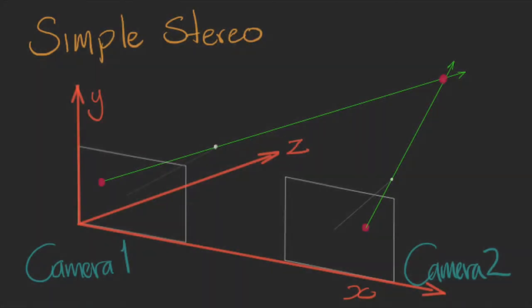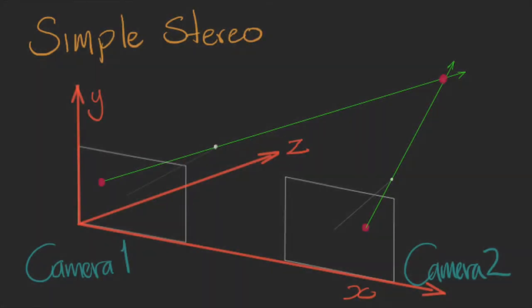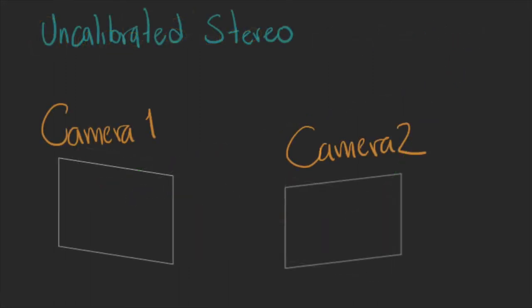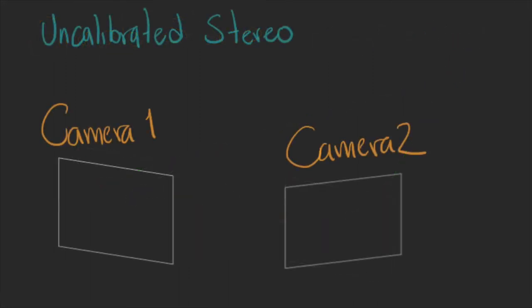In simple stereo we have two cameras that are identical, that they are completely aligned and the only difference is that they are displaced from each other a certain distance on the x-axis. In the uncalibrated setup we remove those limitations. The cameras can be different and the angle in which we place them doesn't need to be the same.